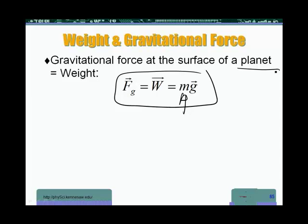If you are at the surface of the moon, small g is not going to be 9.8 meters per second squared. It's going to be actually one-sixth of that. If we are on Jupiter, it's going to be larger than that. On Mars, about the same value.